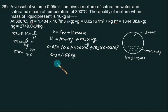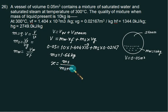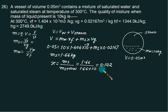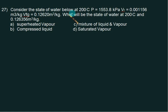Hence the dryness fraction X = m_steam / (m_steam + m_water) = 1.66 / (1.66 + 10), which gives a dryness fraction of 0.142. So the quality of the mixture is 0.142.